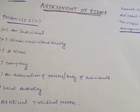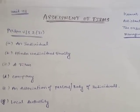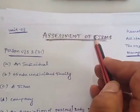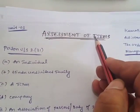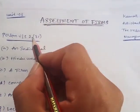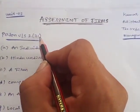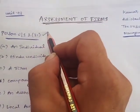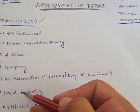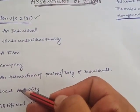Those changes we are going to learn today. So first of all, assessment of firm. Before going to the assessment of firm, as we know, under Section 2(31), 7 categories of persons are defined.